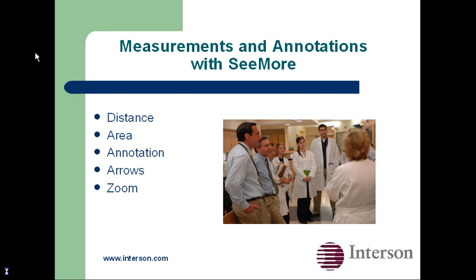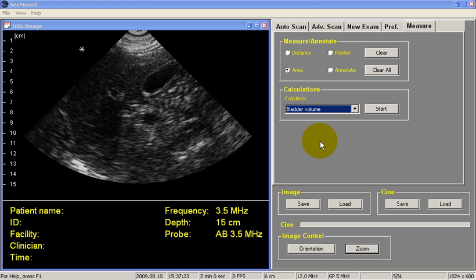Let's talk a little about measurements and annotations with Seymour software. The first thing is you need to freeze an image, and then let's select Distance by left-clicking on the Distance button.